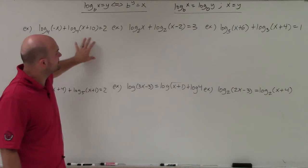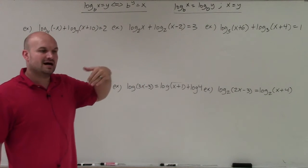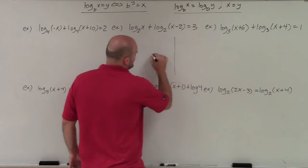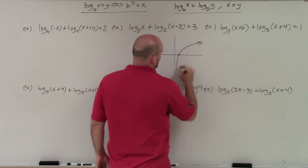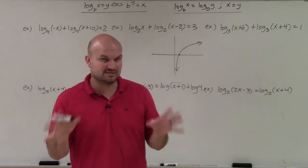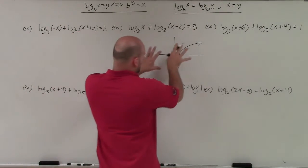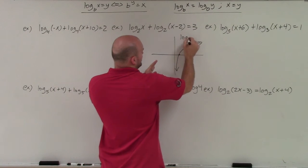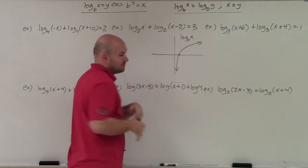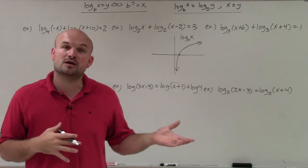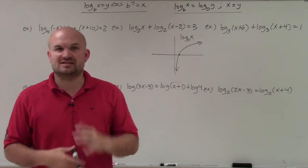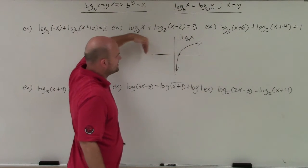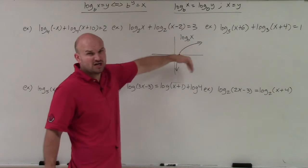We also want to make sure we check for extraneous solutions — solutions that don't work. When we look at the graph of a logarithm with no transformation, we can't take an x value and plug it into log base b of x if it's negative. There is no negative x we can plug in. So whenever we take our solutions and plug them back into the original formula, we can't take the log of a negative answer.